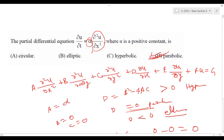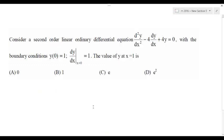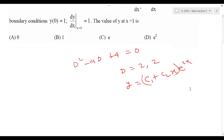Next question: consider a second order linear differential equation with boundary conditions. The value of y at x = 1 is asked. First we find the roots: D² − 4D + 4 = 0, giving D = 2, 2 (repeated root). So y = (C₁ + C₂x)·e^(2x).